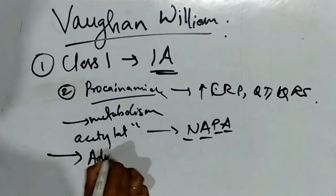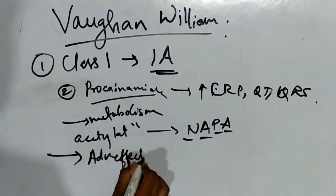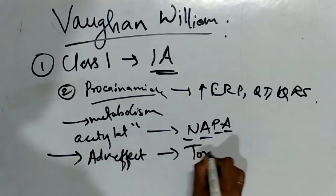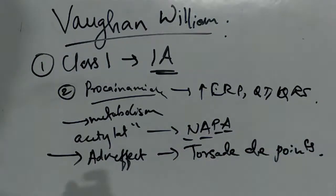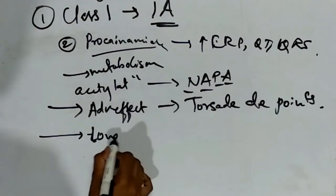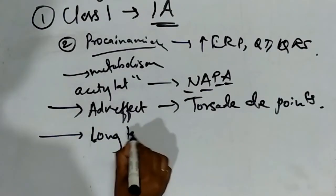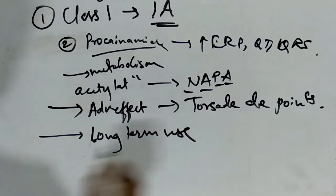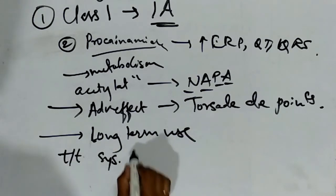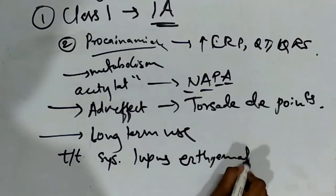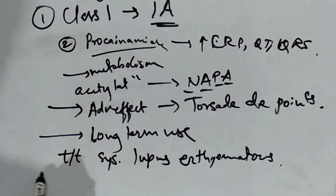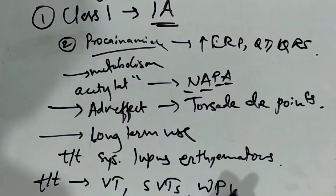The adverse effect of this drug is torsades de pointes, that is twisting of muscles, and long-term use can cause systemic lupus erythematosus. It is also used for the treatment of ventricular tachycardia, supraventricular tachycardia, and Wolff-Parkinson-White syndrome.